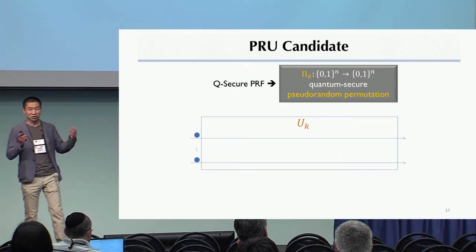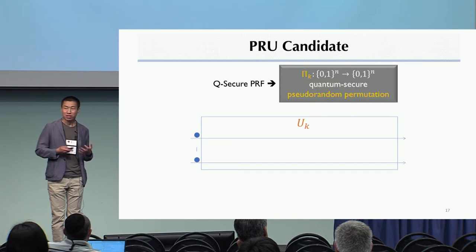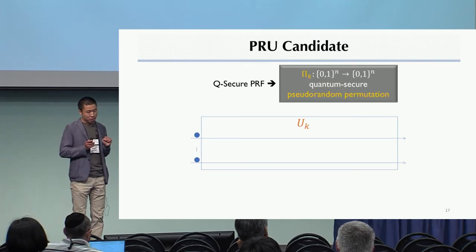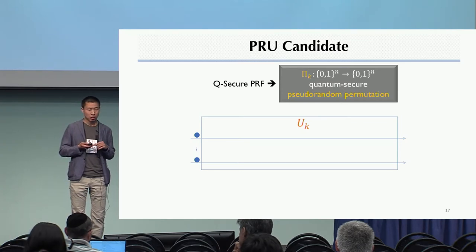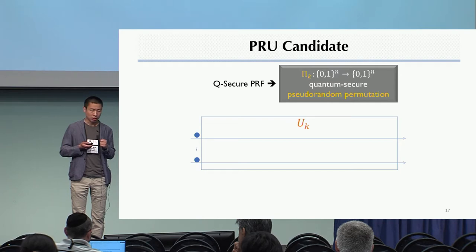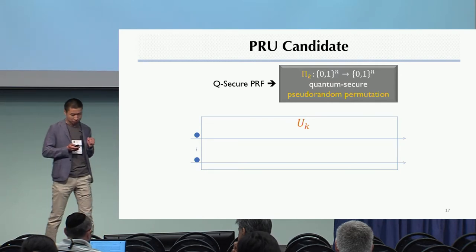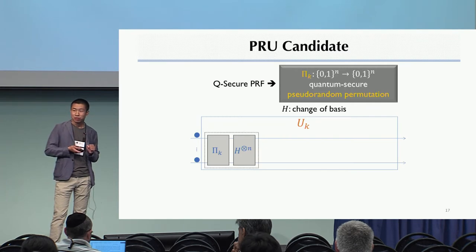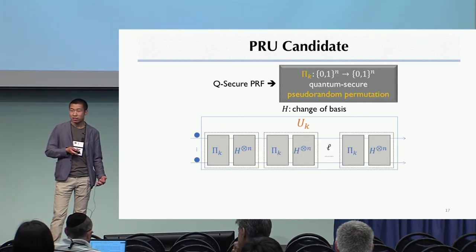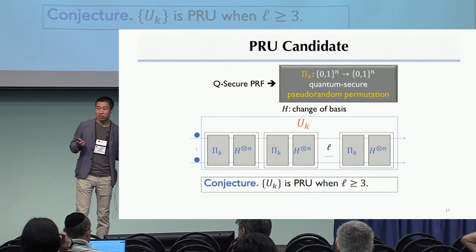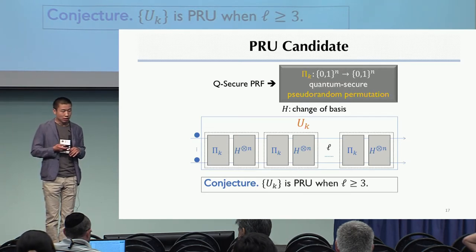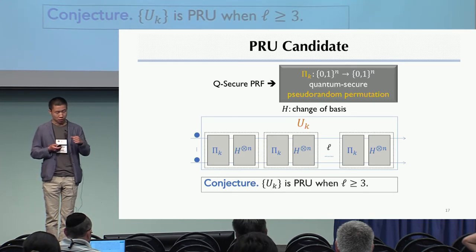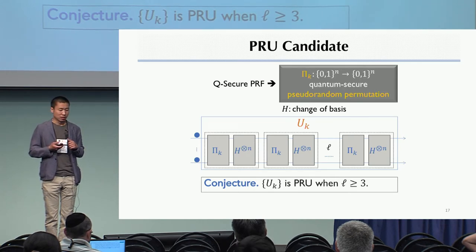But how do we construct a pseudorandom unitary? Well, we've come up with several candidates, but unfortunately, we haven't been able to prove them. But let me tell you the construction. So we're going to take a pseudorandom permutation, a quantum-secure pseudorandom permutation, which exists assuming a quantum-secure pseudorandom function. And then given any n-qubit input, we're going to hit it first by this pseudorandom permutation. And then we're going to apply a bunch of Hadamards, which will change the basis of the qubit, and then we repeat this. And we conjecture with enough repetitions, this will be a pseudorandom unitary. And you can think of various variants of this. For example, instead of doing Hadamard, you can apply a quantum Fourier transform in between.